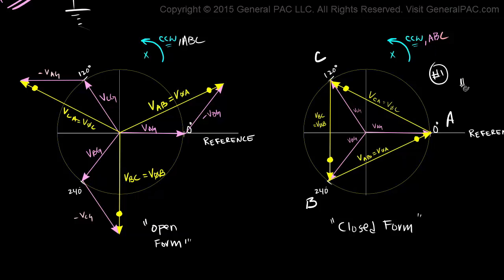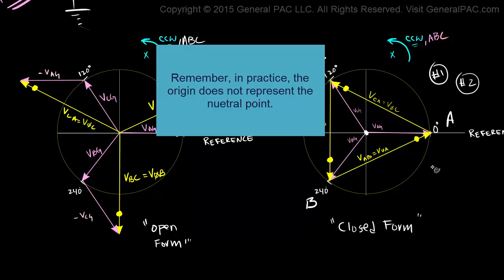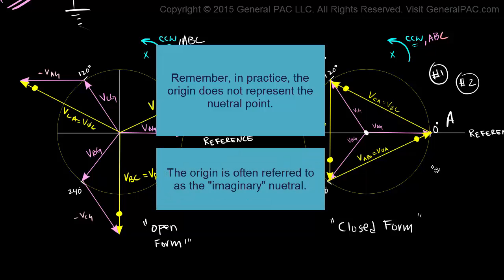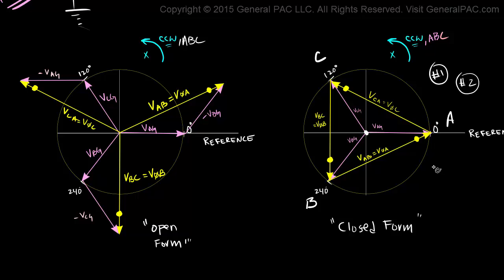The second problem with the closed form phasor diagram is that when we look at it, we think that the origin represents the neutral or the ground. By inspection, the neutral is equal to the ground, and then the question comes up: why is V-A-N equal to V-A-G?